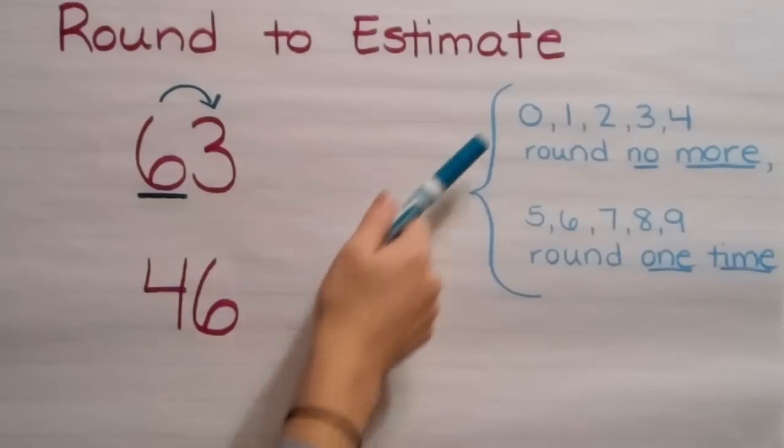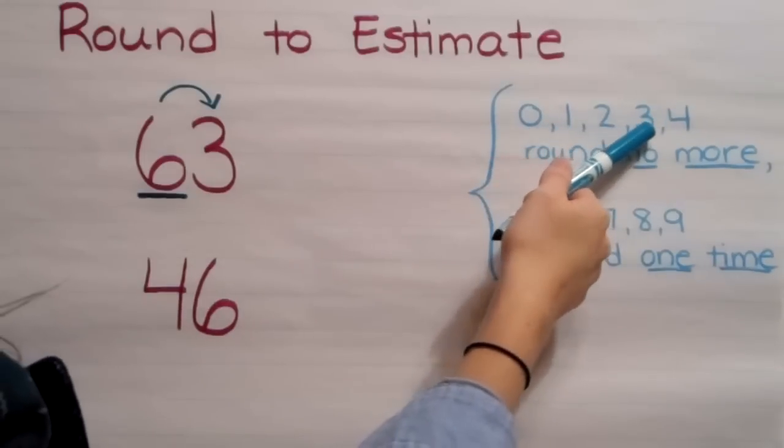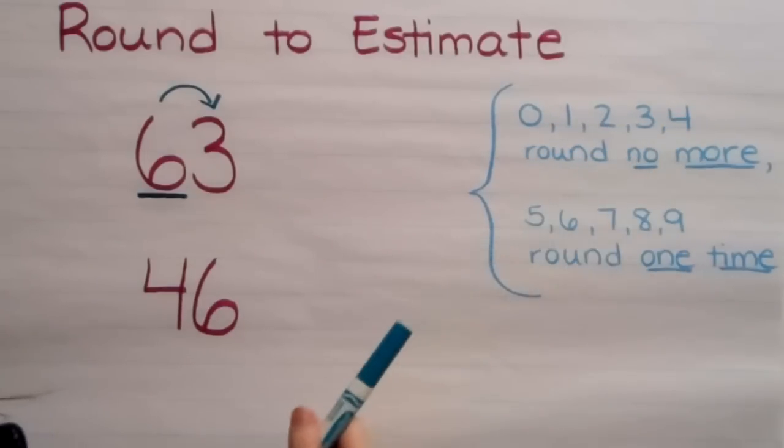The three says, zero, one, two, three, four. Round no more. Five, six, seven, eight, nine. Round one time.